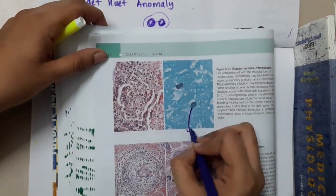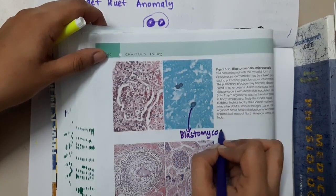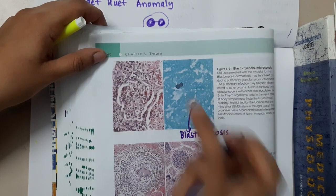This is the picture of blastomycosis which has H-shaped nuclei. Blastomycosis is seen here.